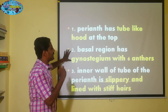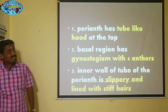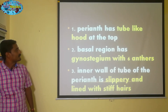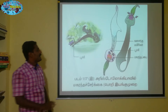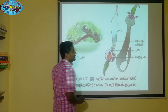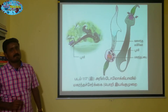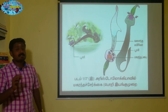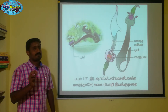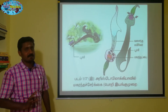In the basal region, there is a gynostecium with six anthers. At the basal region the gynostecium is there with six stamens. In Calotropis only five stamens are attached with the stigma, but here six stamens are attached.